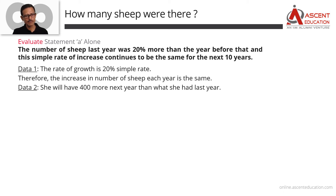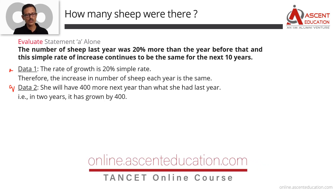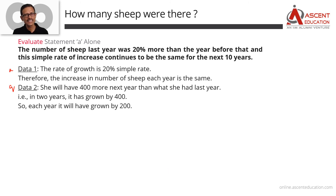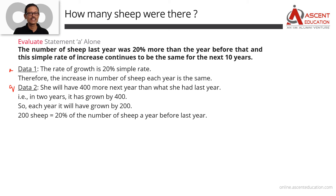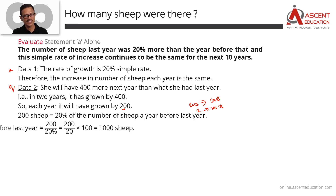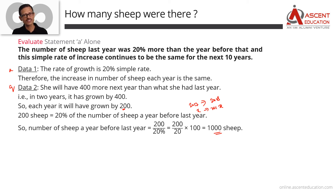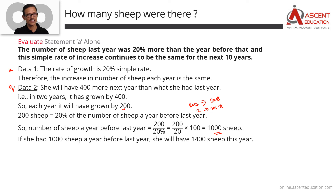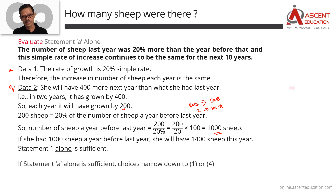Let's summarize Statement A's solution. Statement A says the rate of growth is 20% simple rate, meaning the increase in the number of sheep remains constant year after year. From the question, she'll have 400 more next year than last year — so the increase for 2 years is 400, meaning the annual increase is 200. Since 20% of the year-before-last equals 200, she had 1,000 sheep in 2017, 1,200 in 2018, and 1,400 in 2019. Statement A alone is sufficient.